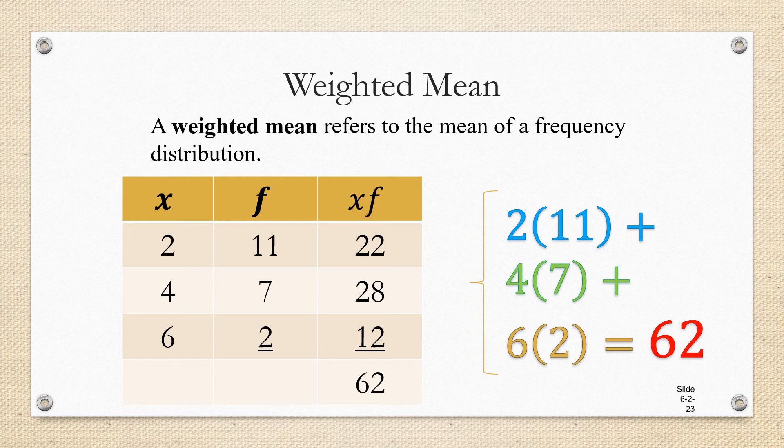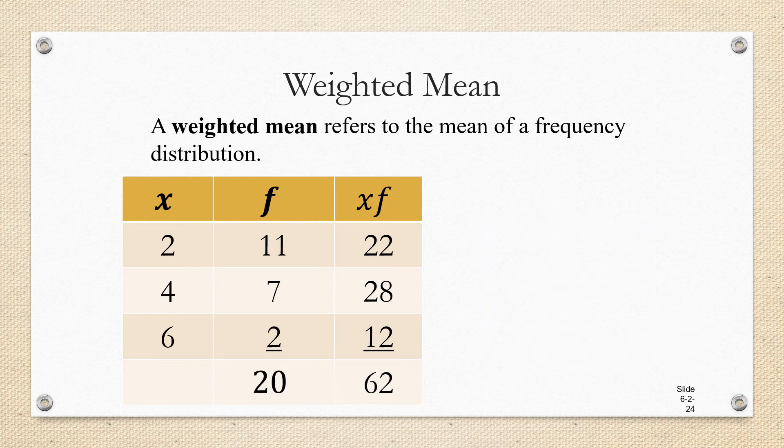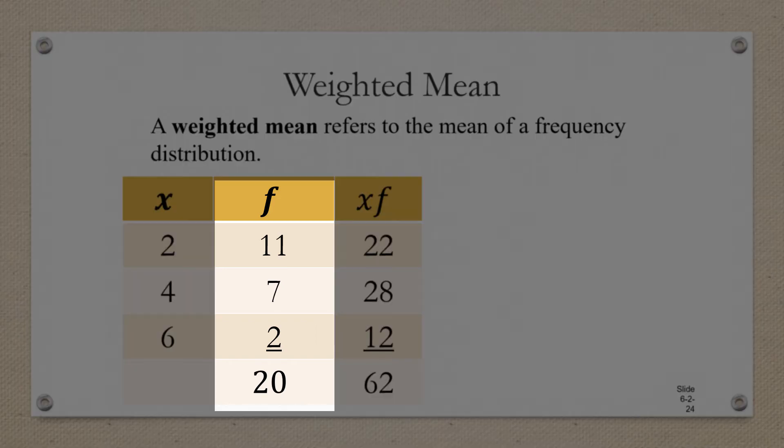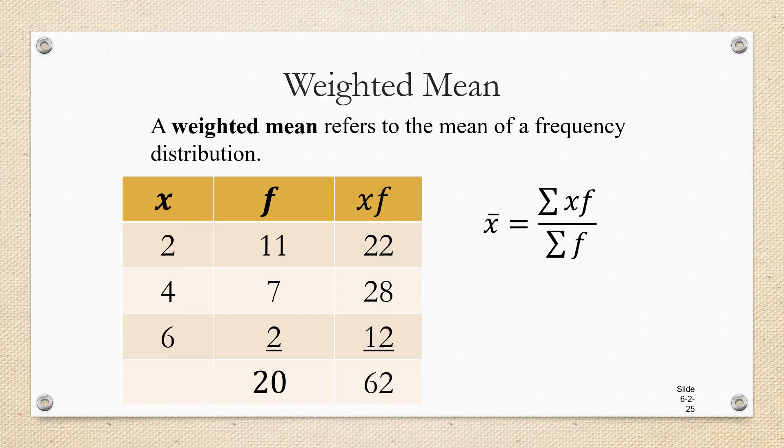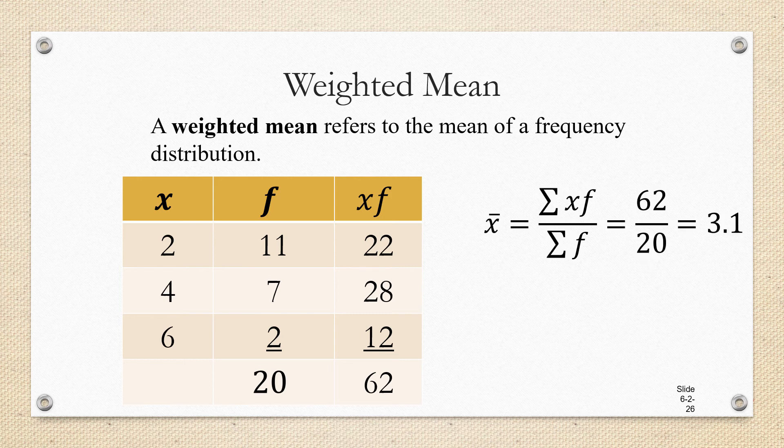So far, what we've done is find the sum of all the data values. Now we need to divide that by the number of data values. They didn't tell us the number of data values, but we can always just add up the frequencies to find the number of data values. 11 plus 7 plus 2 is 20. So to find the mean, we're going to take the sum of all the data values, which is the sum of the x times f products, and divide it by the number of data values, which is the sum of the frequencies.